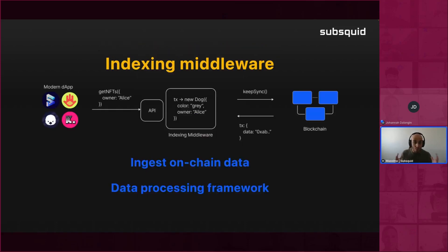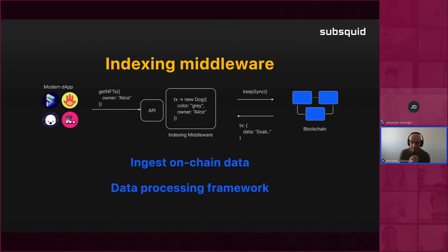What is Subsquid? First of all, it's an indexing middleware framework. An indexing middleware is something you put in the middle — as the name says — between the blockchain and your dApp. It covers 90–95% of use cases. It's what you want when you need to access on-chain data and show it or access it somewhere else, without clogging blockchain nodes with your own requests.